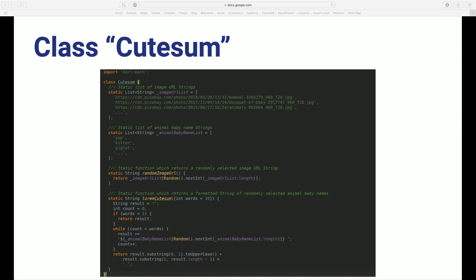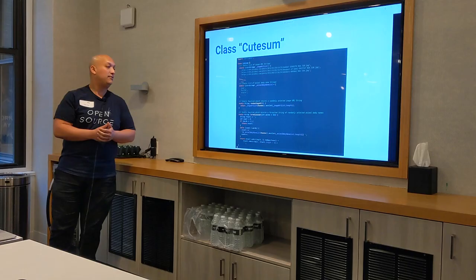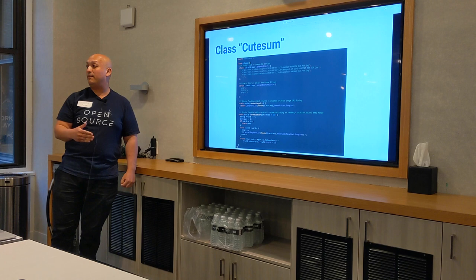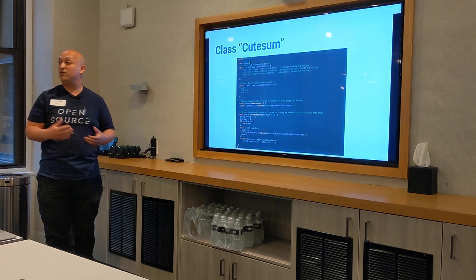This is our entire package. It consists of a class definition and two static collections: one is a list of strings representing URLs for cute animal baby pictures, and the other is a list of animal baby names — both truncated to fit the slide, but there are about a hundred pictures to start out. Then there are two methods: one called randomImageURL which picks a random image and returns that URL, and another that returns a Lorem Ipsum style string of at minimum ten words of randomly selected animal baby names.